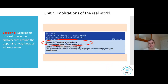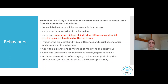Still within Section A, and although I am focusing on questions centred around schizophrenia, lots of the mark scheme elements will also apply to the other behaviours within this unit. This is an overview of what you need to be able to do: study of behaviours — learners must choose three from six nominated behaviours — and characteristics to know, understand biological, individual differences and social psychological explanations, and be able to evaluate them.